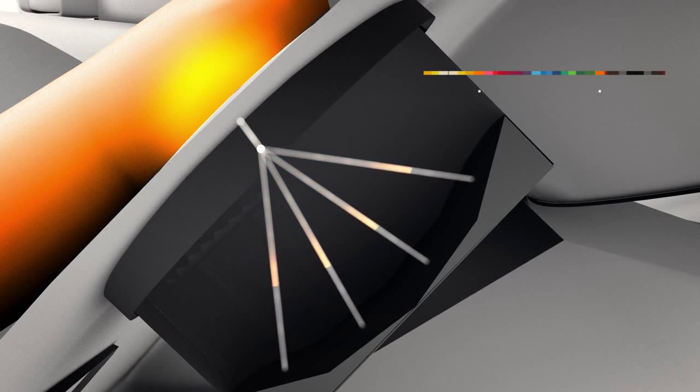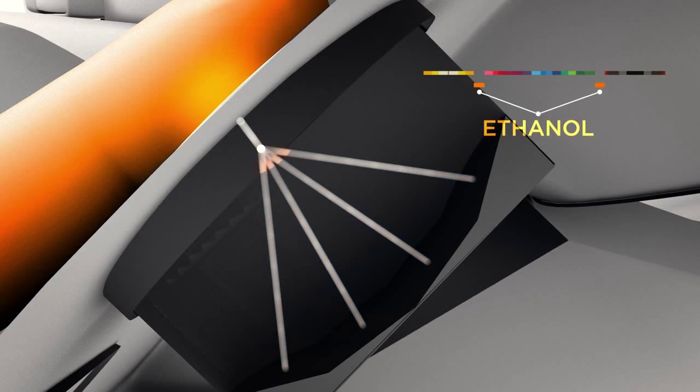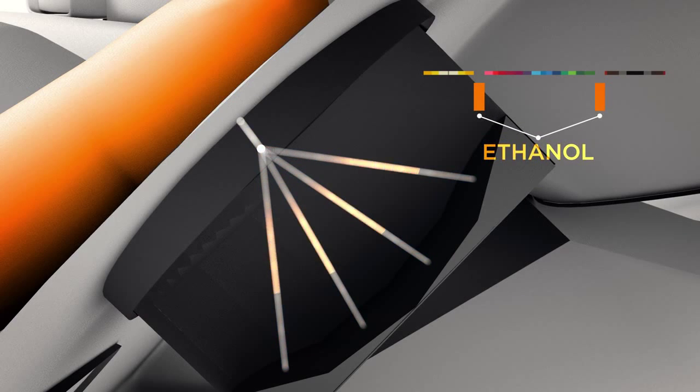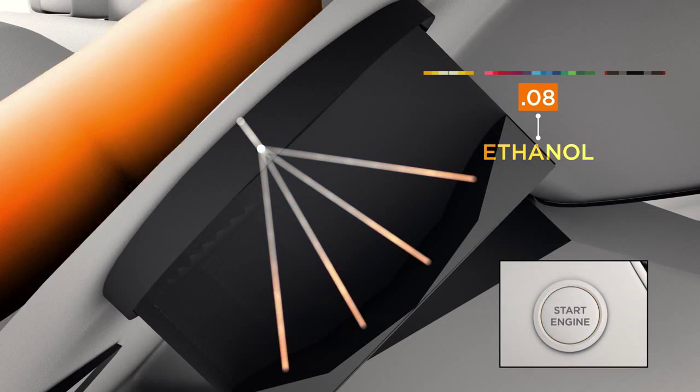Alcohol absorbs specific wavelengths of light. By measuring the light's intensity, the system can precisely pinpoint the driver's blood alcohol level.